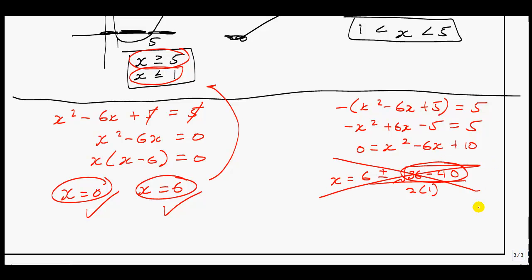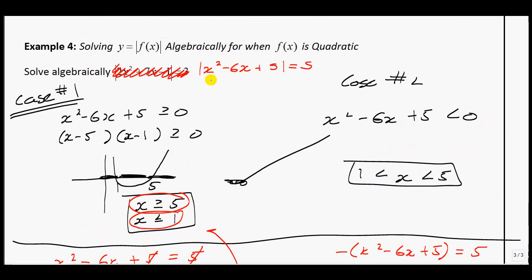So that means in this example, we have no solutions that come from case number 2. So your final answer would simply be x equals 0 and x equals 6 as the two spots where this quadratic, if I come back up to the beginning, that quadratic intersects at 5.